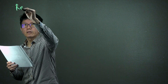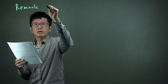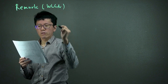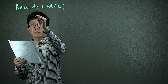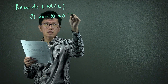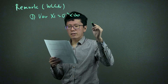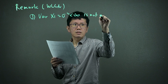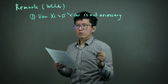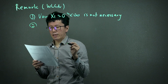A remark for the SLLN: the condition that sigma squared, i.e., variance of Xi, is finite is not necessary. It is okay for the variance to be infinite for the SLLN.